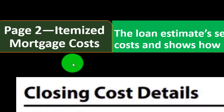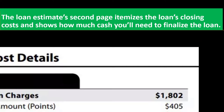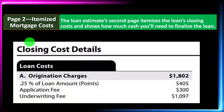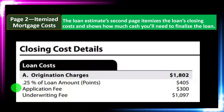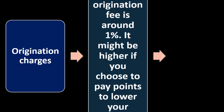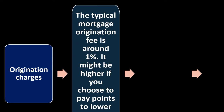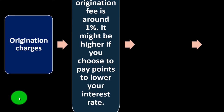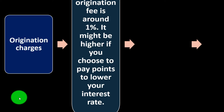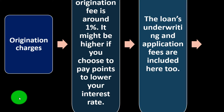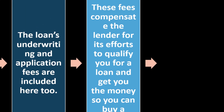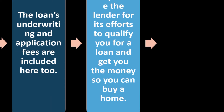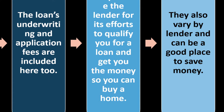Page two itemizes the loan's closing costs and shows how much cash you'll need to finalize the loan. Origination charges include 0.25% of the loan amount for points, application fees, and underwriting fees. The typical origination fee is around 1%, and it might be higher if you choose to pay points to lower your interest rate. These fees compensate the lender for qualifying you for a loan. They vary by lender and can be a good place to save money.